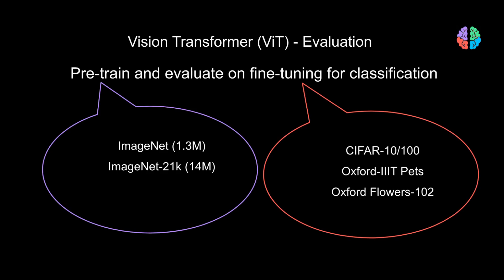The first way they evaluate the proposed network is by standard classification. They first pre-train the network on the standard ImageNet and ImageNet-21k datasets, which is the superset of ImageNet with 14 million images. They then fine-tune on datasets like CIFAR-10, CIFAR-100, Oxford Flowers, and Oxford Pets for classification tasks and report accuracies.